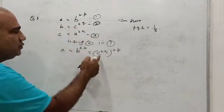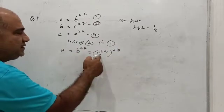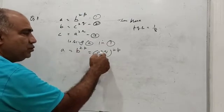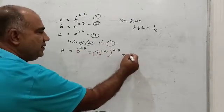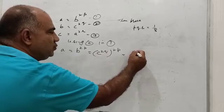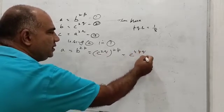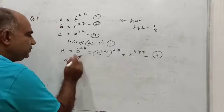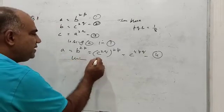This is because b = c^(2q), so in place of b I have written c^(2q). Since it is b^(2p), it becomes c^(2q) raised to power 2p, which ultimately becomes c^(4pq). Let me call this equation 4.